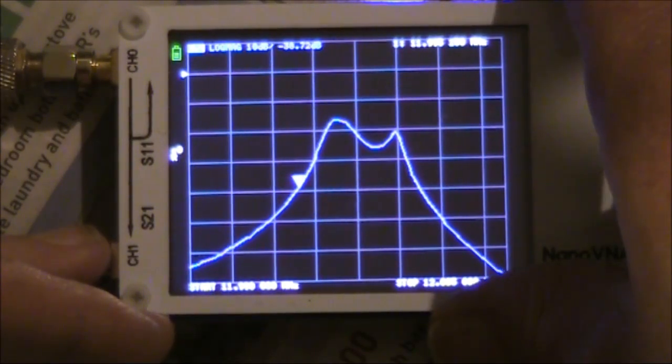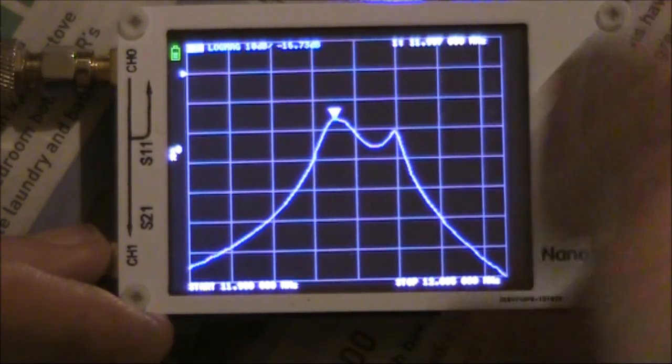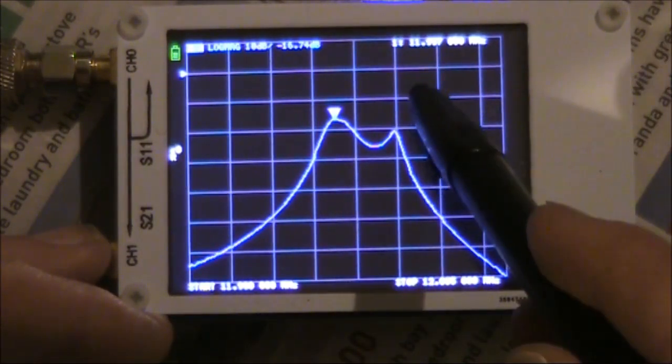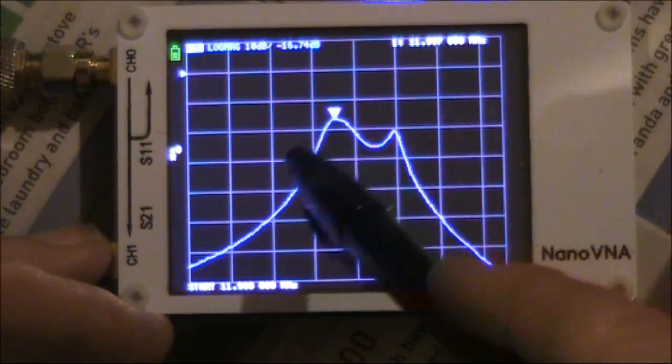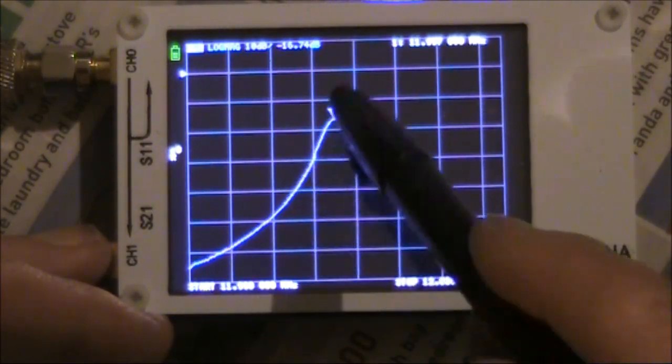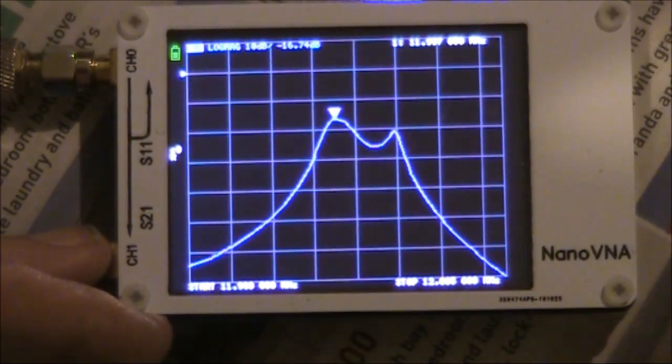But something like this would be vaguely okay for an SSB receiver, especially if you had your carrier here so it emphasised the highs, with this used as a lower sideband filter.